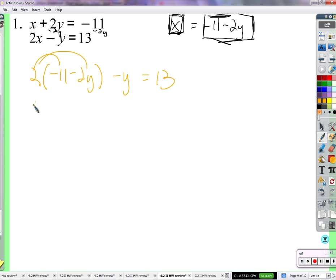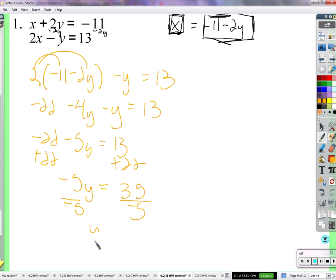Distributing the 2, we get negative 22 minus 4y minus y. Combine these like terms, we get negative 22 minus 5y equals 13. Add 22 to both sides. Negative 5y equals 35. Divide by negative 5, and y is negative 7.